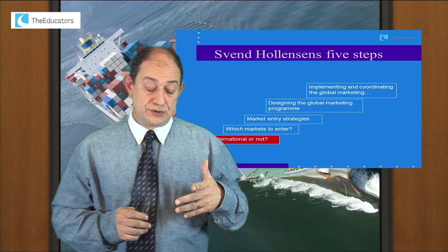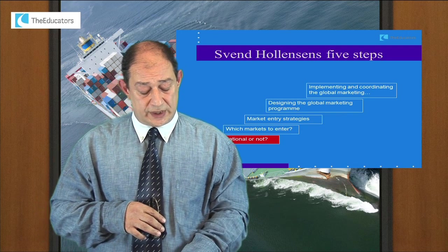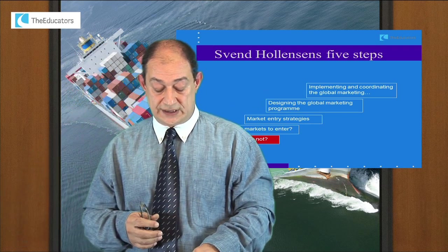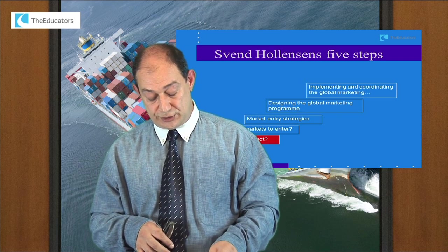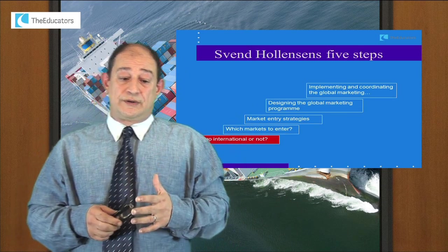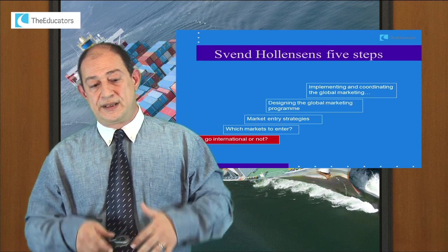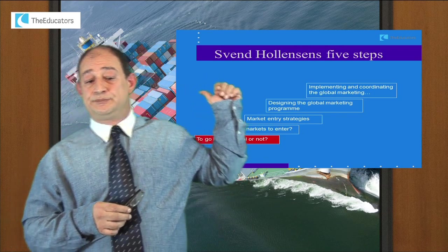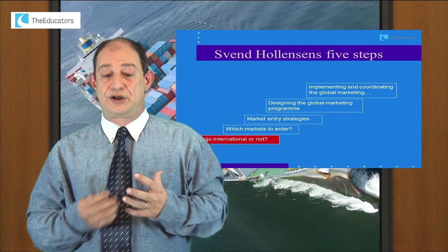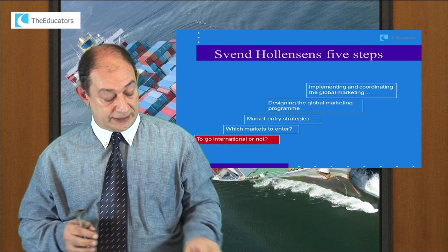I'm going to use the five-step model by Sven Hollinson, a Danish scholar who has written a book — you can see it in the notes and you're welcome to buy it, it's pretty good. Sven's five steps start by asking the basic question: shall we go international or not? Then it builds on that — which market to enter, the market entry strategy, then looking at the global marketing program, what kind of marketing program you need, and then moving to implementation.